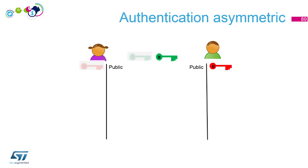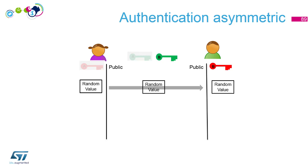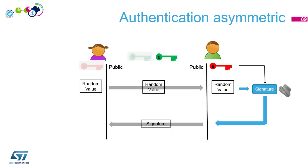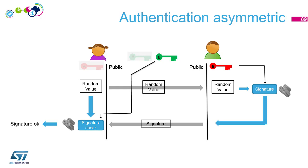Now let's see with the asymmetric approach. In the asymmetric context, Bob and Alice have key pairs — a public key and a private key. Alice chooses a random value, the challenge, and shares it with Bob. Bob applies the signature process with his private key — for RSA, that's a hash then an encryption of this hash. Bob sends the signature to Alice. Alice uses Bob's public key to decrypt the signature, gets the hash, and checks the hash of the random value. If the signature is valid, that means she's talking to Bob — someone who has the private key capable of generating that signature.